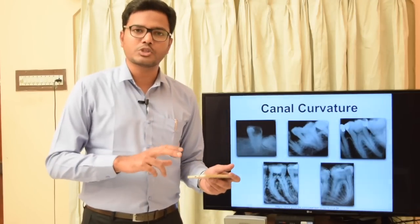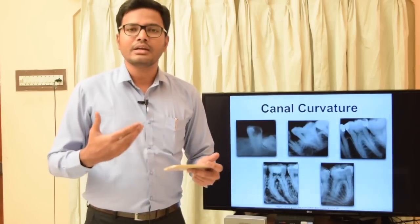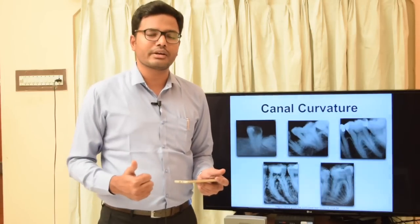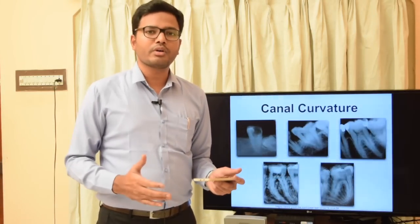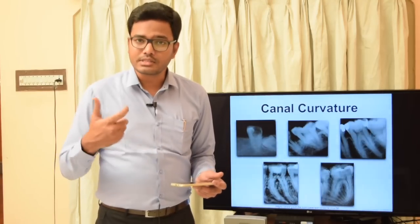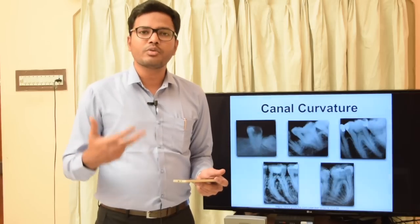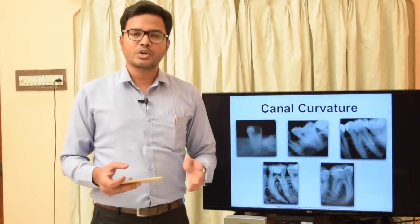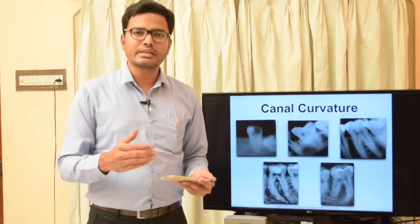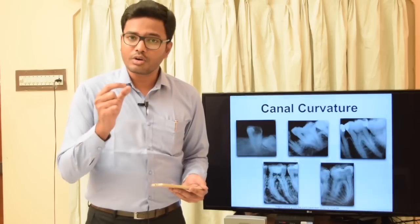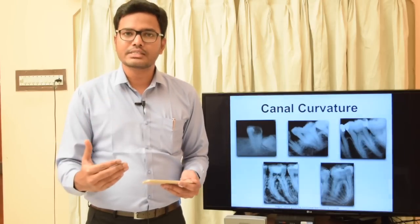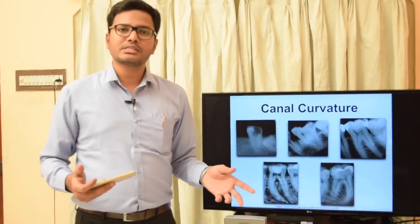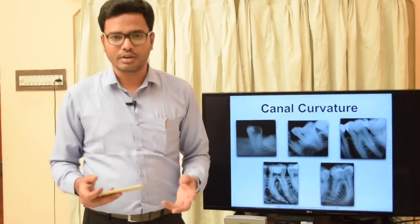Success in negotiating these curvatures depends on many factors. Root canal curvatures range from 20 to 30 degrees, and there are numerous methods to calculate curvature. Success depends on the degree of curvature, the size of the canal, the flexibility of the instrument, and the skill of the operator. Even a minimal curvature of 20 degrees can be difficult to negotiate if the canal is narrow, whereas a curvature of up to 30 degrees can be negotiated easily if the canal is wider.